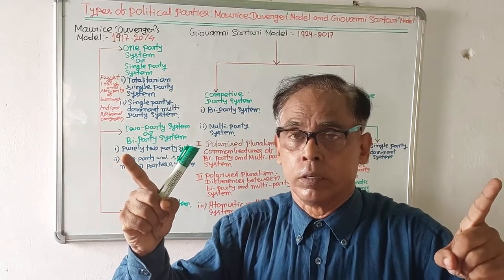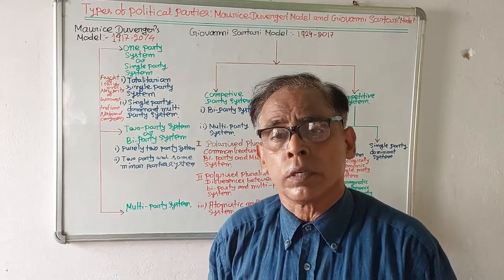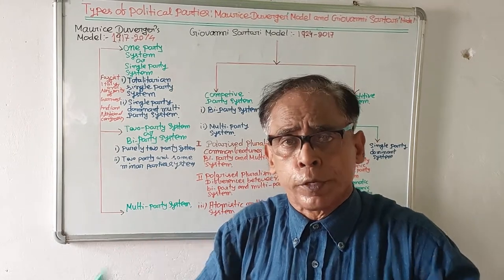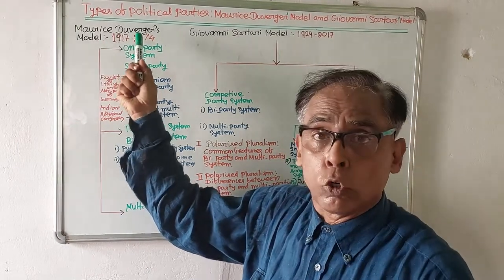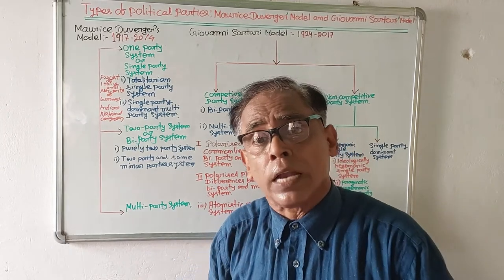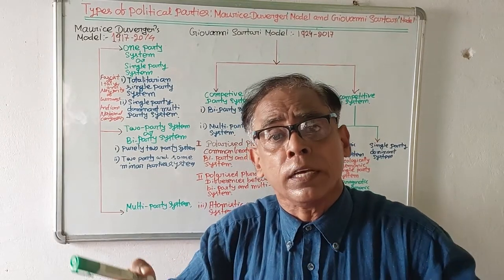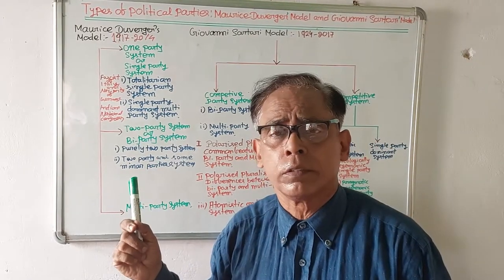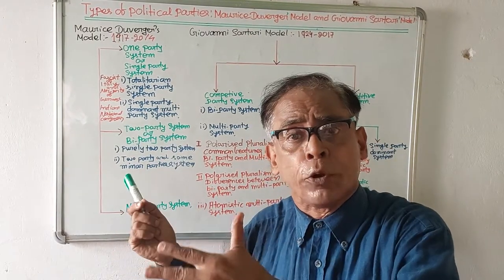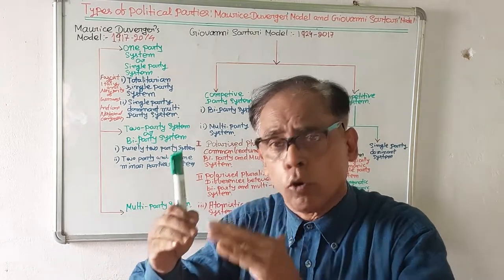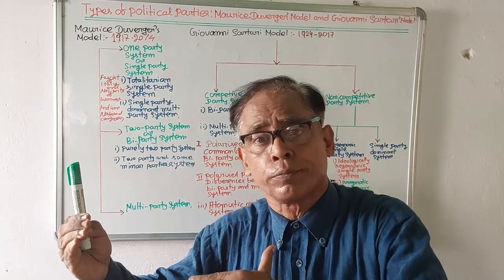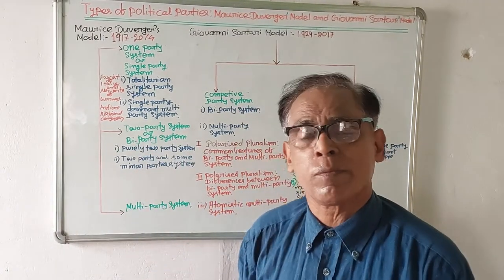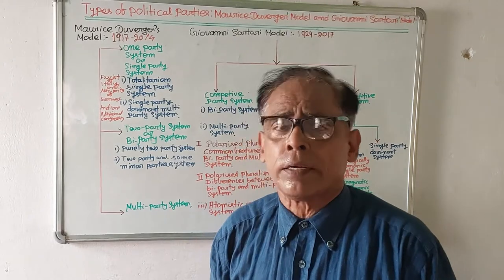There are two important models relating to classification of political parties. One model has been given by Maurice Duverger, and another model has been given by Giovanni Sartori. I request my viewers to watch this video attentively and, in the course of watching, write down your notes so that the problem of notes will be over.